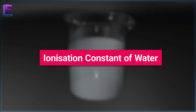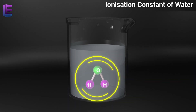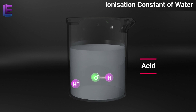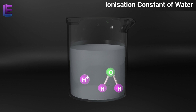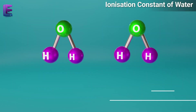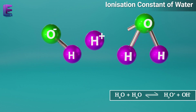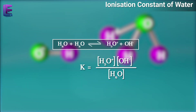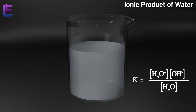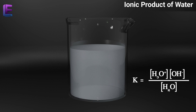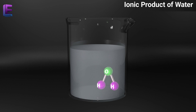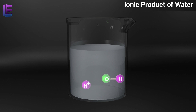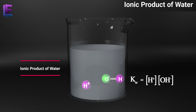Ionization constant of water. In pure water, one H2O molecule donates a proton and behaves as an acid, while another H2O molecule accepts the proton and behaves like a base. H2O plus H2O gives rise to H3O-plus plus OH-minus. Since water is pure, its concentration is stable; therefore in the equilibrium equation, we remove H2O and use the constant Kw, the ionic product of water. Kw equals [H-plus][OH-minus].